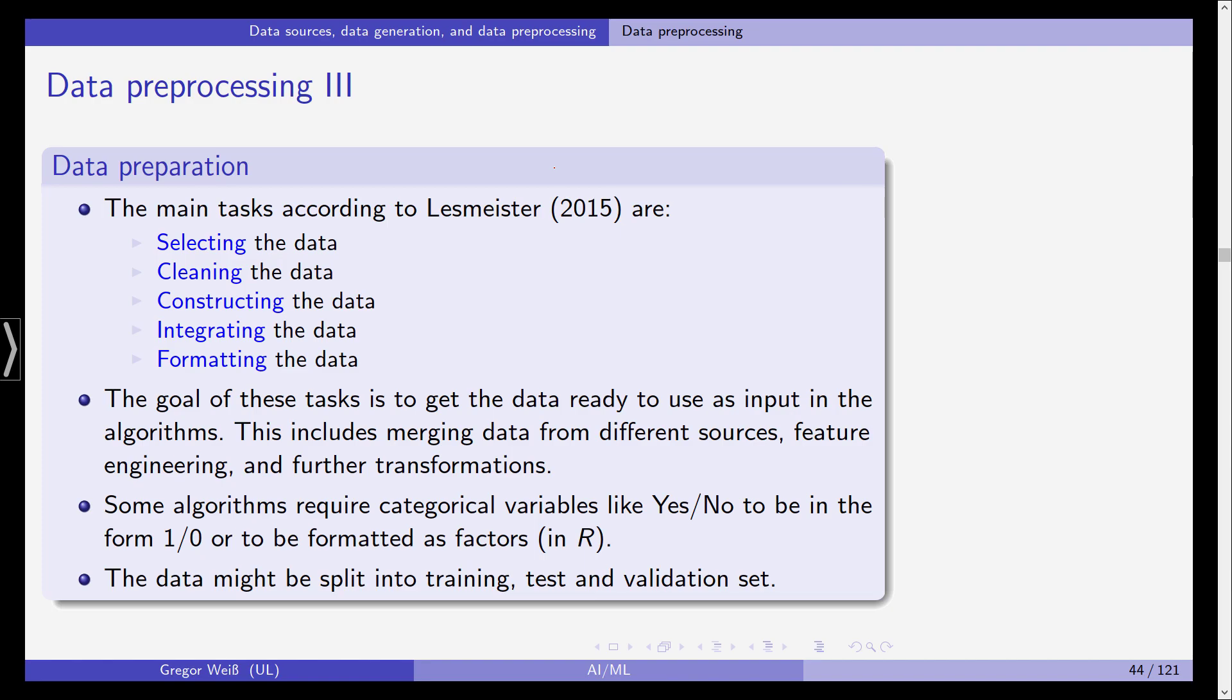In data preparation, you need to select the data, clean the data, construct the data, integrate and format the data. In the simplest example, this would simply mean putting it all into an Excel file or spreadsheet and making sure that the spreadsheet is in a format that is readable by your statistical software. The goal of these tasks is to get the data ready to use as input in the algorithms. This includes merging data from different sources, feature engineering, and maybe further transformations you need to apply to make it readable to the computer.